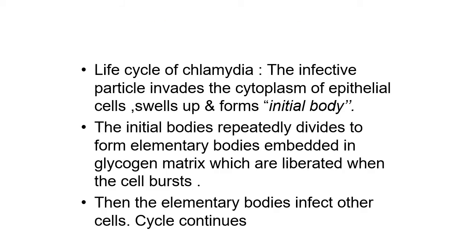The life cycle of chlamydia: the infective particle invades the cytoplasm of epithelial cells, swells up and forms an initial body. The initial body is repeatedly divided to form elementary bodies embedded in a glycogen matrix, which are liberated when the cell bursts. From the burst cell, the elementary bodies again infect other cells and the cycle continues.